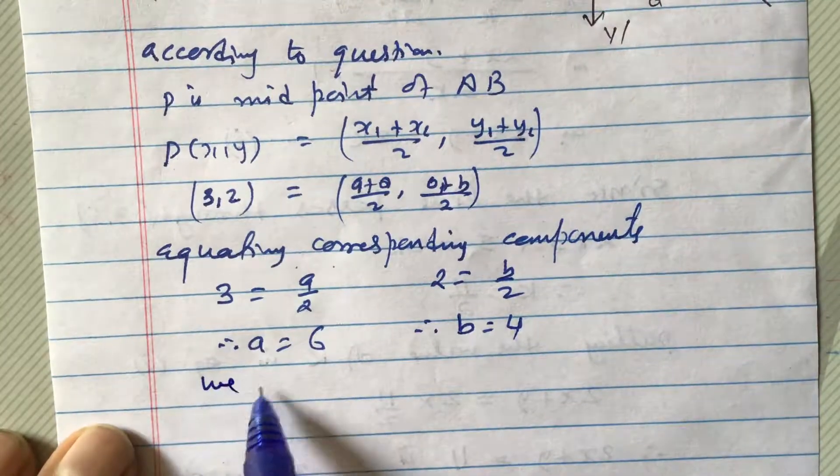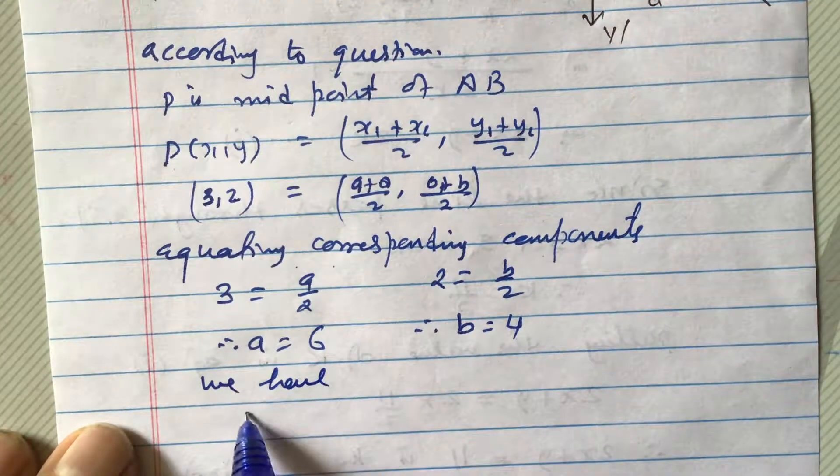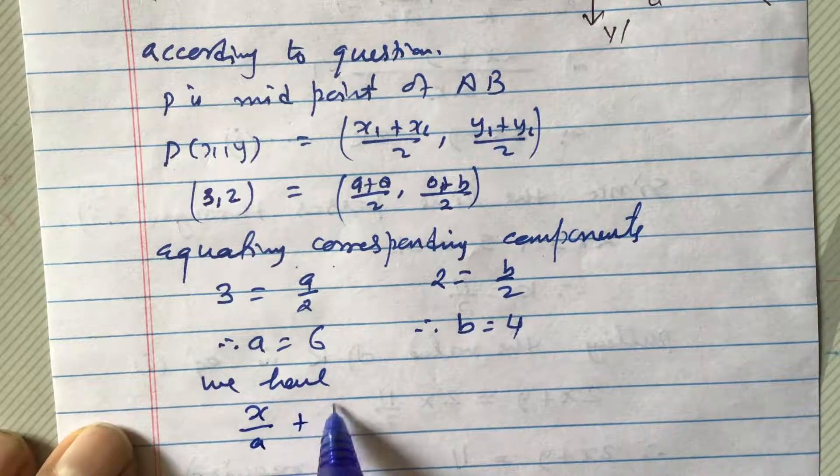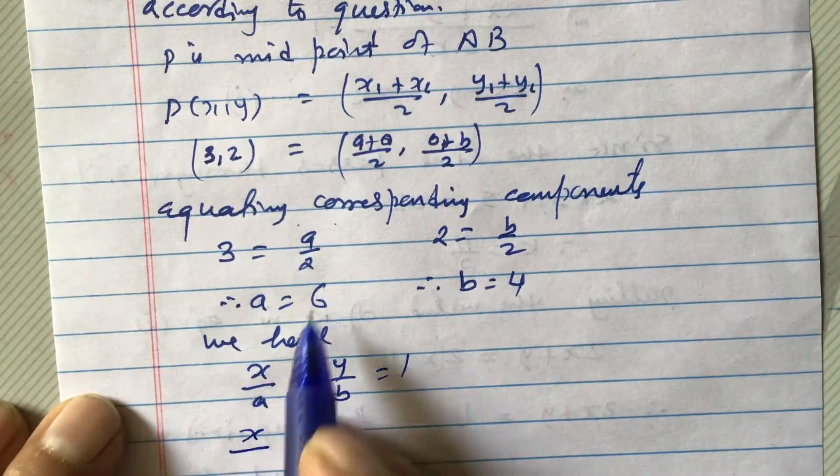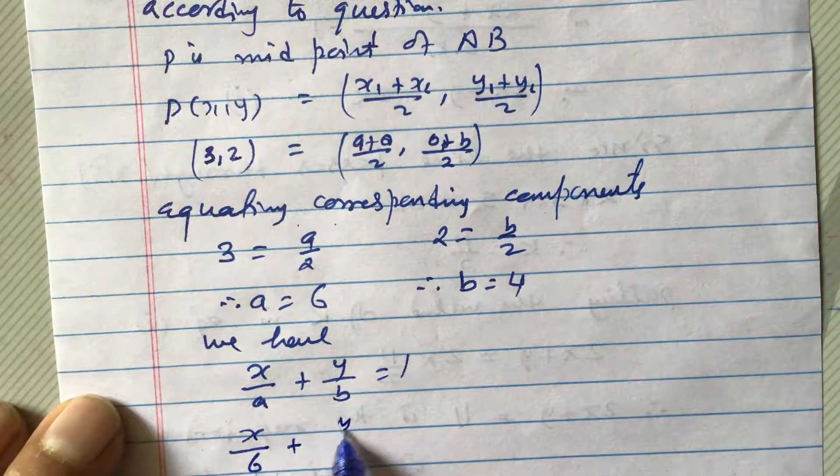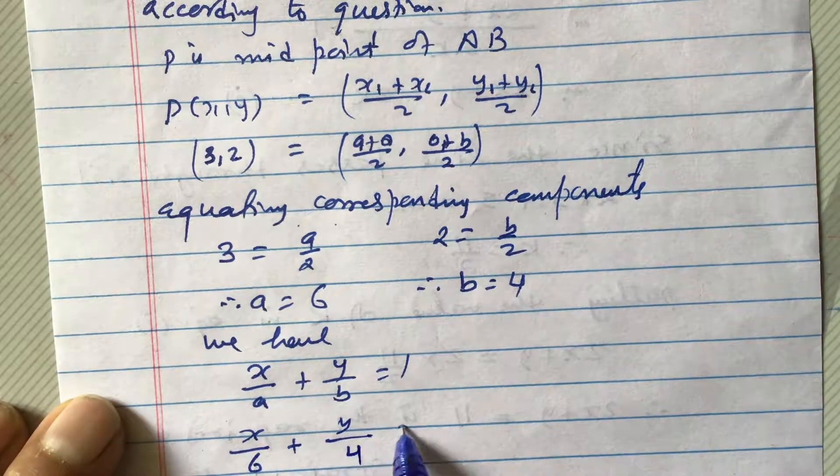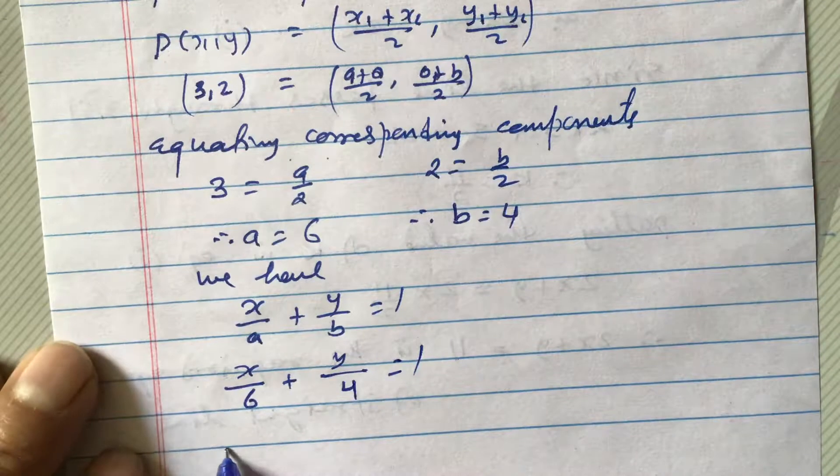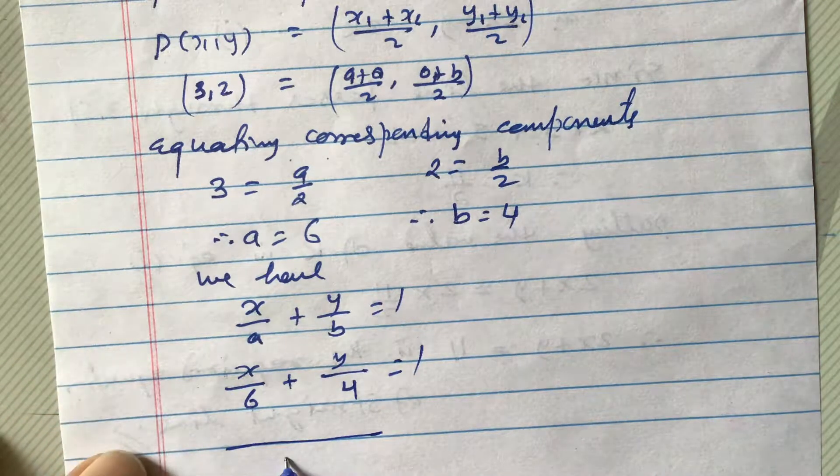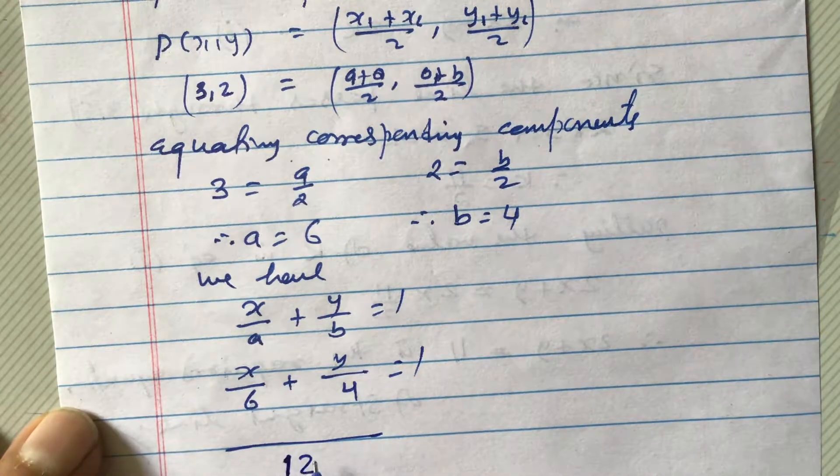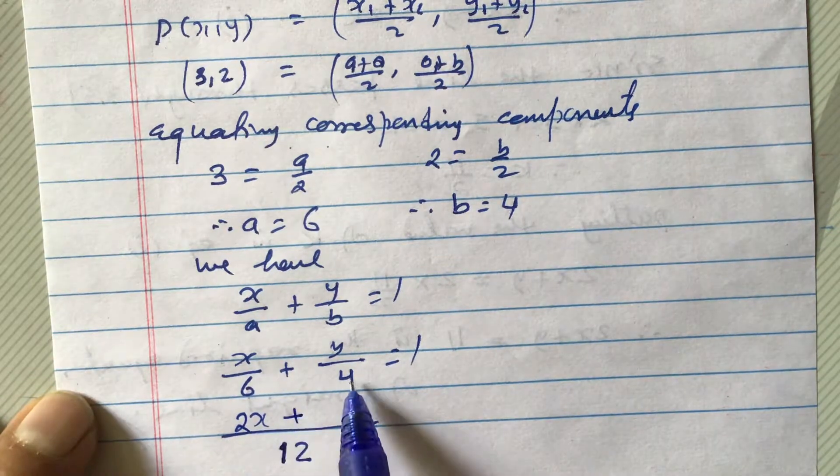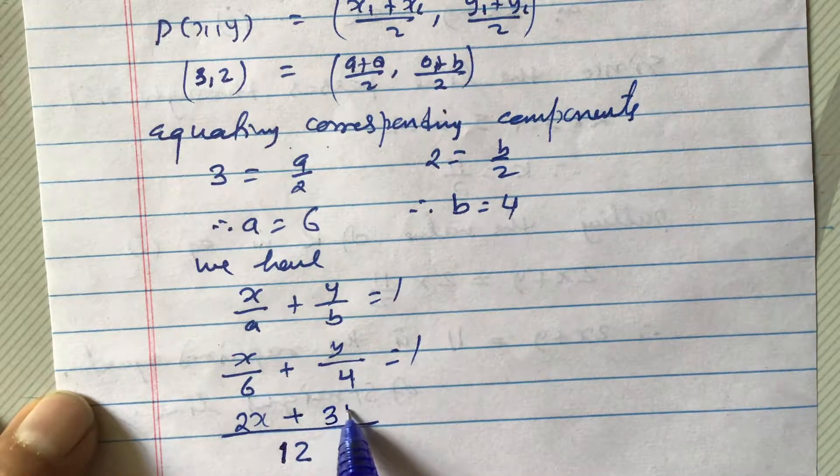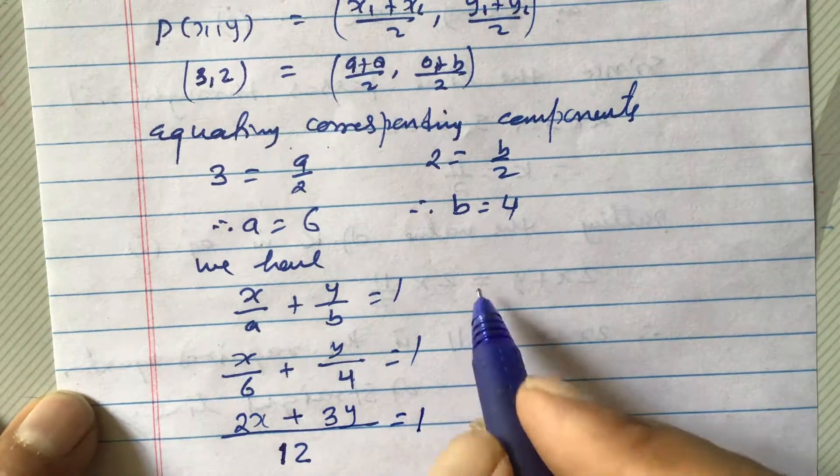Now, we have the formula is x by A plus y by B equals to 1. So, here x by A is here 6 plus y by B here 4 equals to 1. So, LCM of 6 and 4 will be 12. So, 6, 2 into 12, 2x plus 4, 3 into 12, so 3y equals to 1.